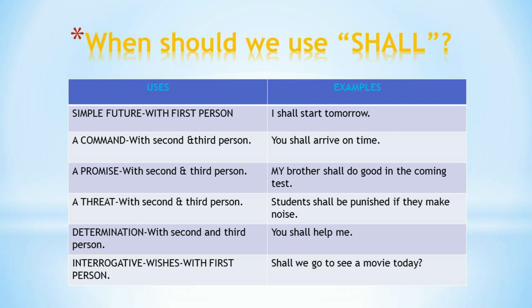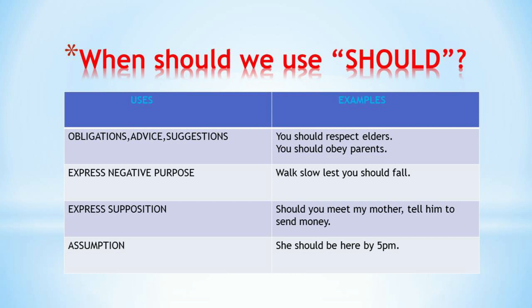For a command: 'You shall arrive on time.' For a promise with the second and third person: 'My brother shall do well in the coming test.' For a threat: 'Students shall be punished if they make noise.' For determination: 'You shall help me.' For interactive or interrogative suggestions with the first person: 'Shall we go to see a movie today?'